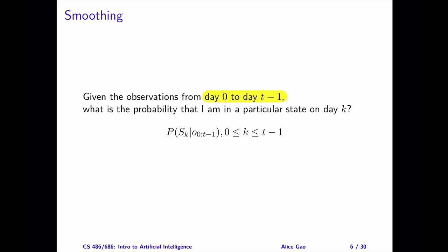what is the probability that I am in a particular state on day k in the past? Mathematically, what is the probability of S sub k given O sub 0 to t minus 1?